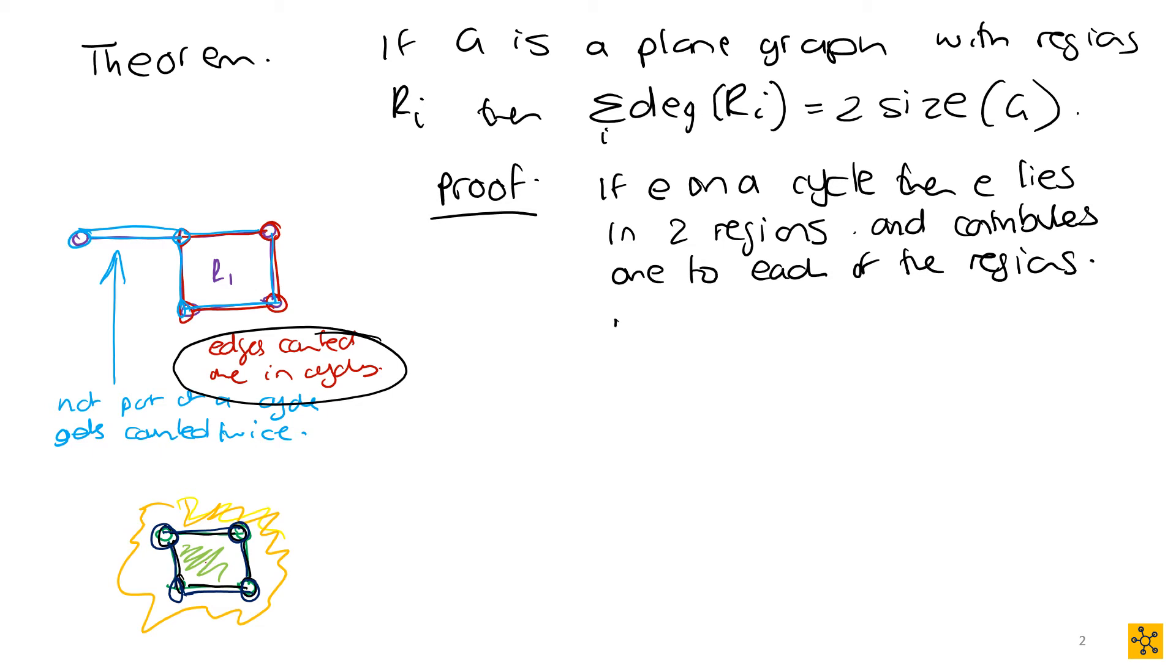Then we're like, if E does not lie on a cycle, so in other words, the situation like over there, then it lies in only one region. And you can see it by over there, when it's not in a cycle, it's literally lying in one region. Same as like if you had another example where we have this kind of a situation. Again, you only have one region.